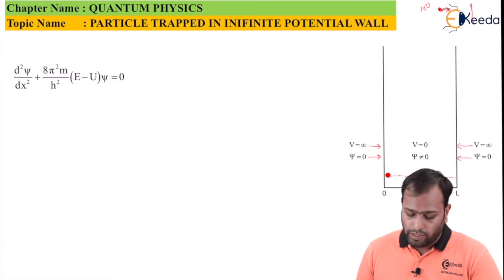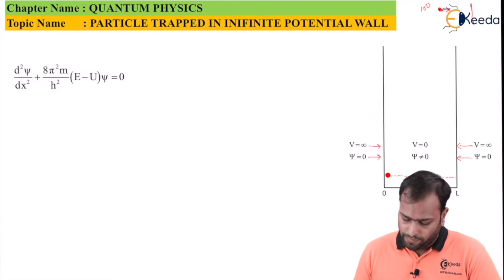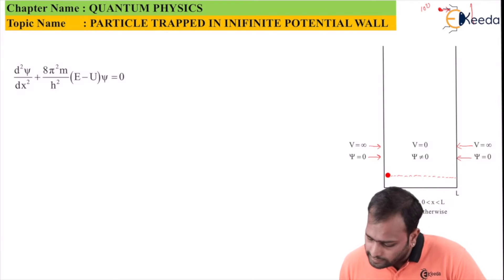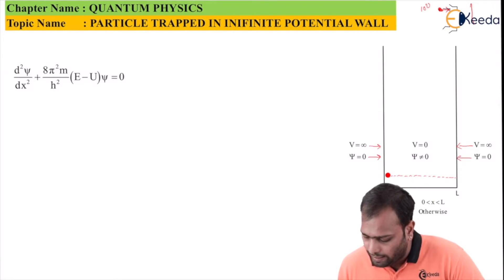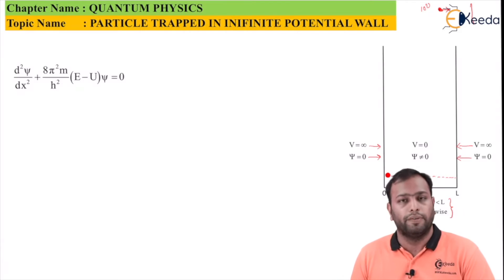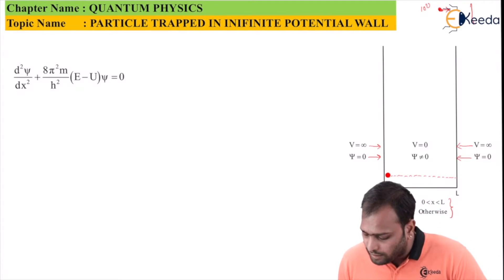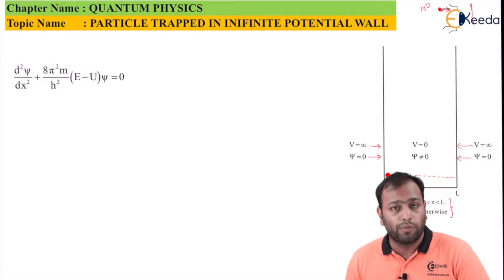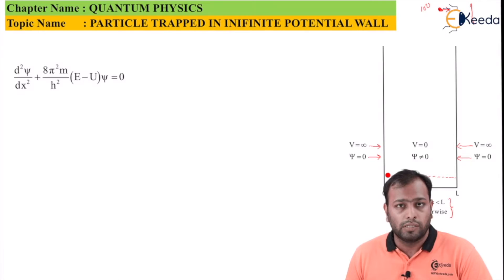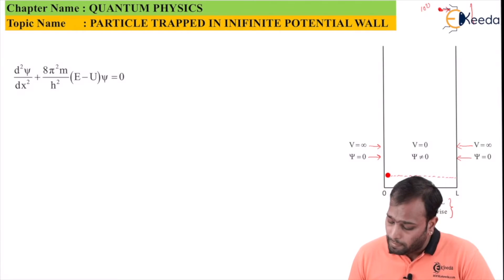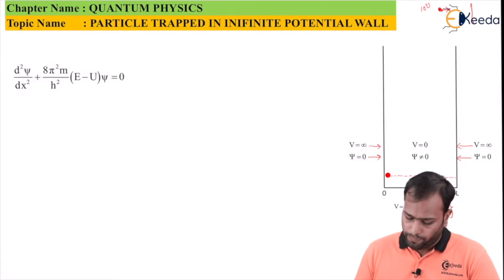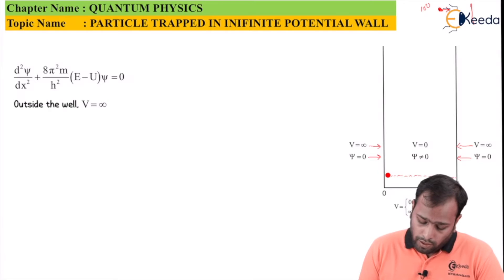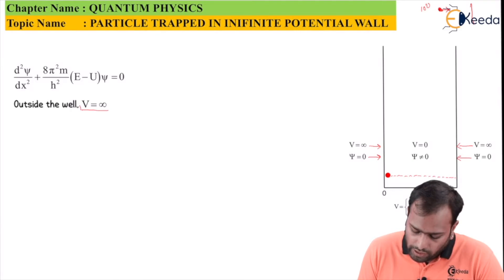Now let's begin with Schrödinger's time-independent wave equation. The potential V = 0 when the particle's position is between 0 and L (strictly less than, not less than or equal to), and V = ∞ otherwise. Important note: do not write less than or equal to, because the potential on the walls — the boundary condition — is also zero.